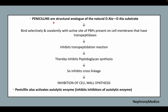Penicillins are structural analogs of the natural D-Ala-D-Ala substrate. They bind selectively and covalently with the active site of penicillin-binding proteins present on the cell membrane that have transpeptidase activity. This inhibits the transpeptidation reaction, thereby inhibiting peptidoglycan synthesis, so there is no cross-linkage and there is inhibition of cell wall synthesis. Penicillin also activates autolytic enzymes by inhibiting the inhibitors of those autolytic enzymes.